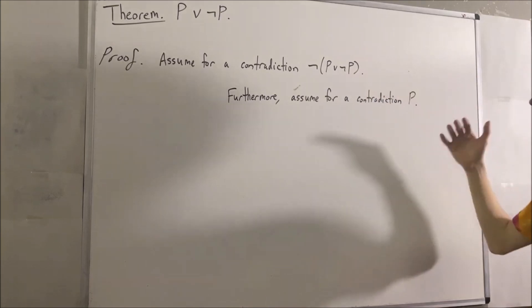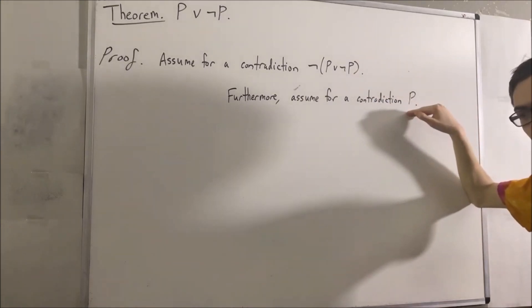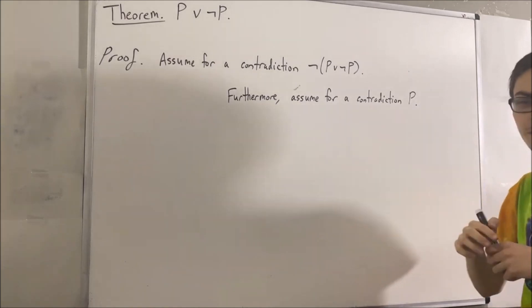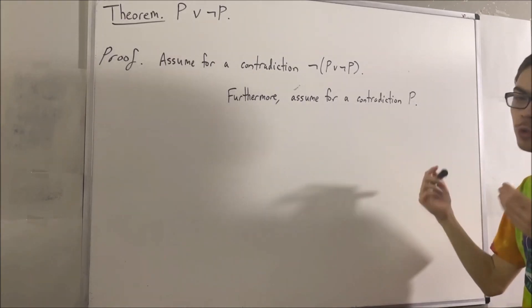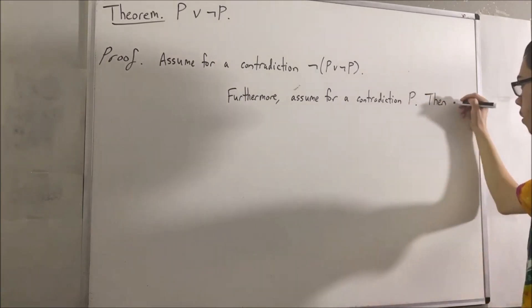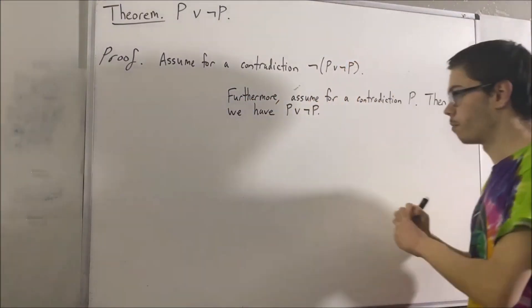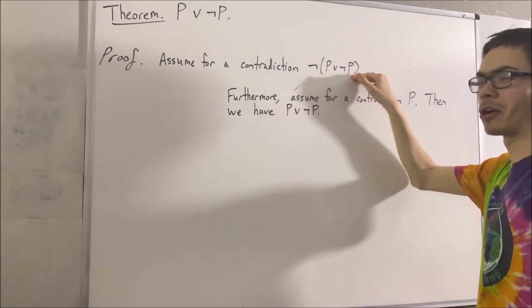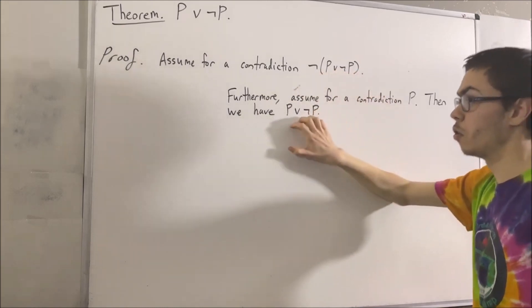Okay, well, if P is true, then that means P or not P is true, if we recall from our rules for disjunctions. But wait a minute, this contradicts what we're assuming about our universe. So we have a contradiction.